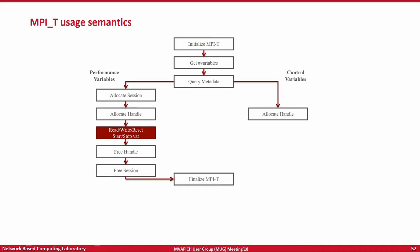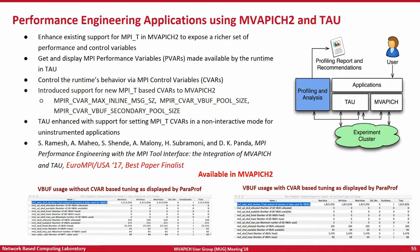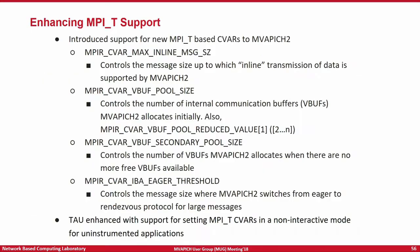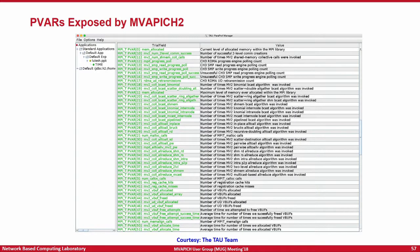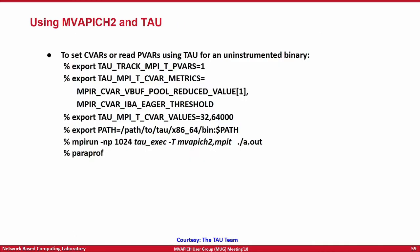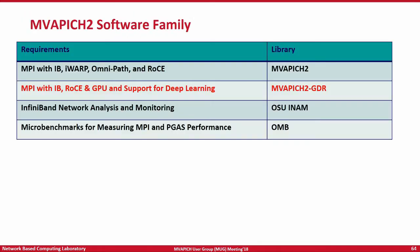This support is available right now in MVAPICH2 together with TAU. You can use various performance and control variables to dynamically change application behavior and get better performance. These are the list of control variables that MVAPICH2 currently supports which can be changed dynamically at runtime. Any questions on what has been discussed so far? If not, let's quickly go over the features of MVAPICH2-GDR.